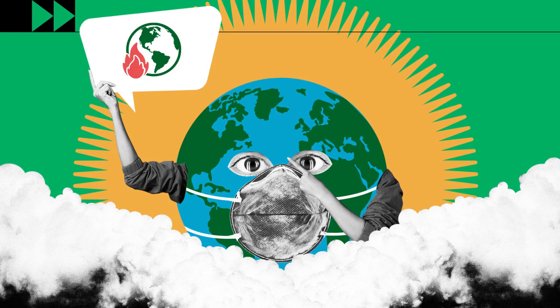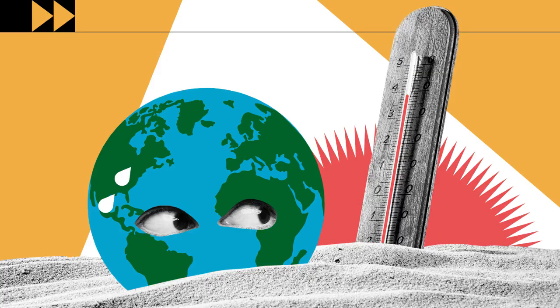As a result, the Earth is now about 1.1 degrees Celsius warmer than it was in the late 1800s. The last decade was the warmest on record.